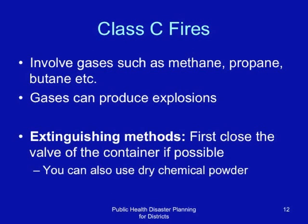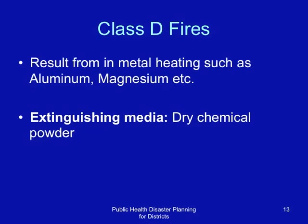Class D fires result from metal heating such as aluminum and magnesium. The main extinguishing media is dry chemical powder. These fires are capable of reaching very high temperatures. Dry chemical powder is useful for all classes of fires.